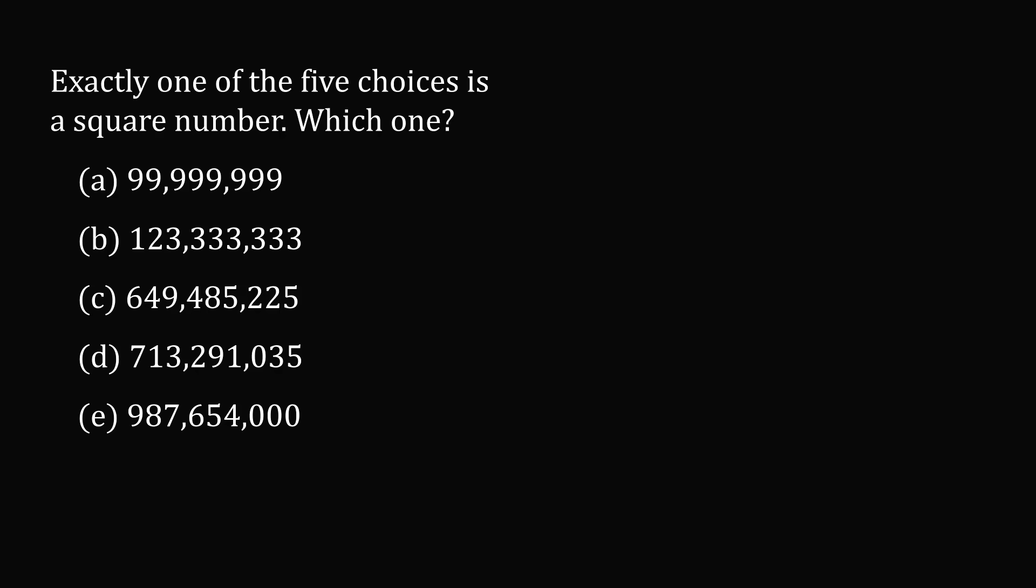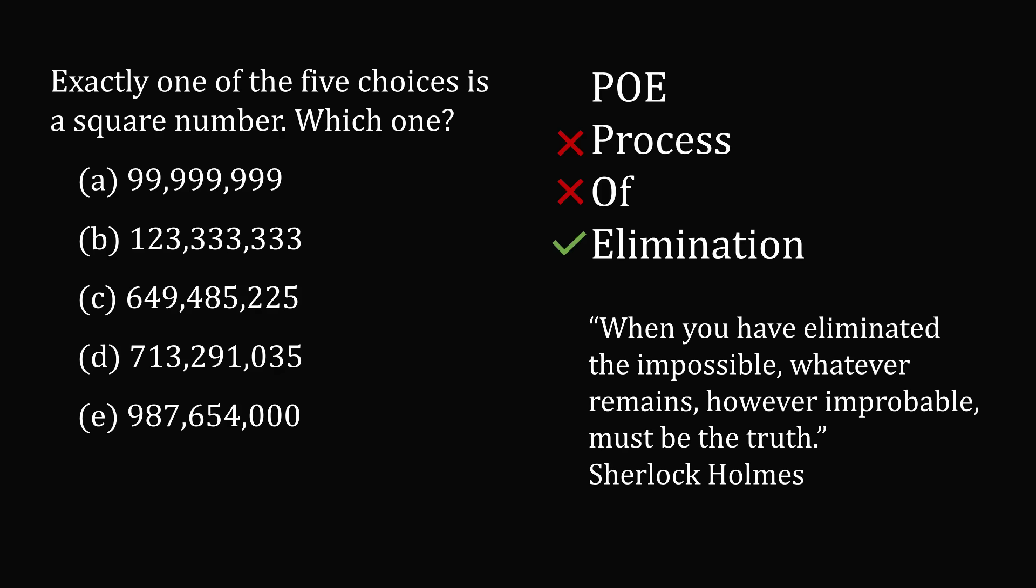This question is not testing your trivia knowledge of perfect squares. It's not testing whether you can extract a square root. This question is actually testing your knowledge of number theory. The way to solve it is by using the process of elimination. If you can say which numbers are not square numbers, then you will be left with the option that is a square number. When you have eliminated the impossible, whatever remains, however improbable, must be the truth.